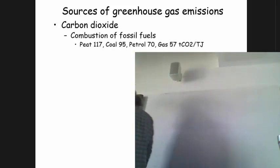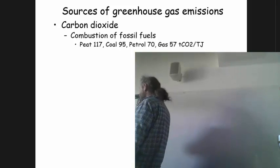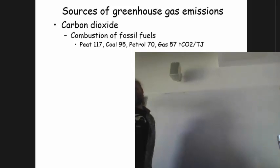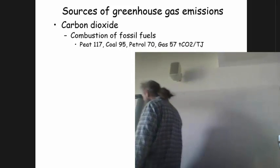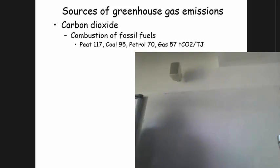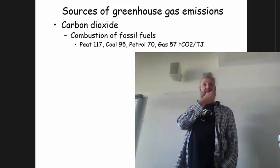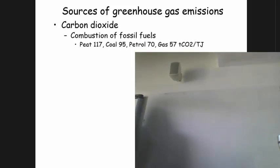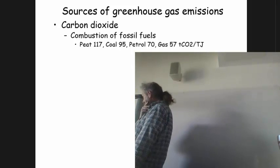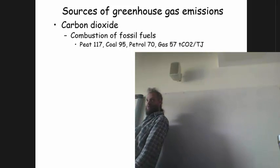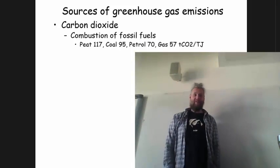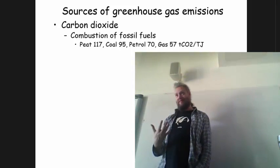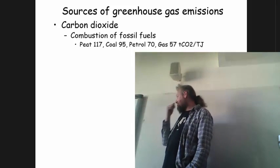Fossil fuels are not created equally — they are formed by geological processes. Peat is essentially a very young form of fossil fuel and the heaviest in terms of CO2 emissions per energy unit. In Ireland there's still a lot of peat burning for power generation. Coal is next. The unit here is the amount of CO2 that comes out per energy gained in kilojoules. Petrol is about 70, gas is about 57. Different fuels differ significantly in their CO2 emissions per unit of energy gained.